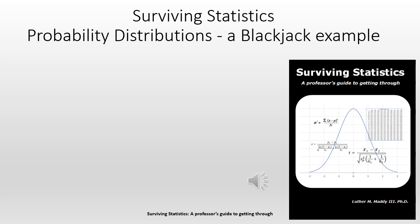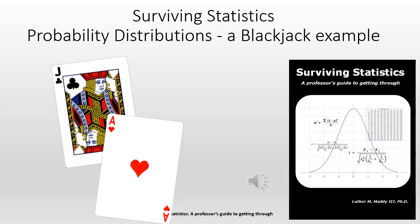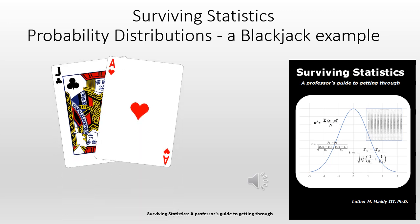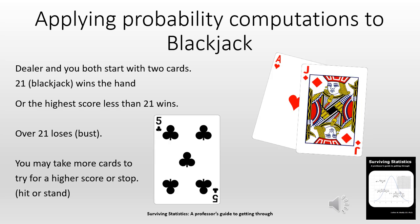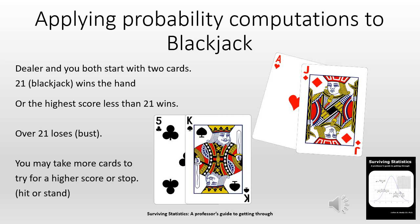This video is a supplement to the probability distributions chapter, so we're going to use an example using a blackjack game to help you understand probability distributions a little bit better. Just in case you're not familiar with blackjack, let's briefly explain how it works. Both you and the dealer will start with two cards. The object of the game is to get 21. The highest score less than 22 wins; go over 21 and you lose — that's called going bust. If you have less than 21, you may take more cards, called hitting, or you may stop, called standing.